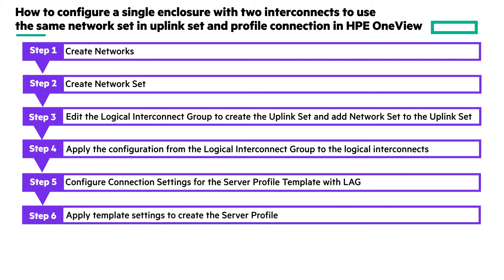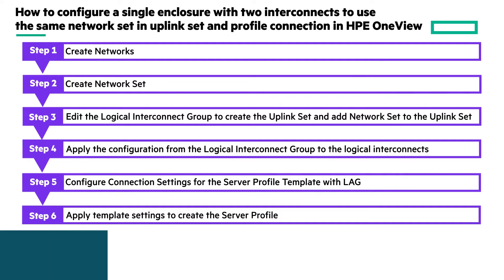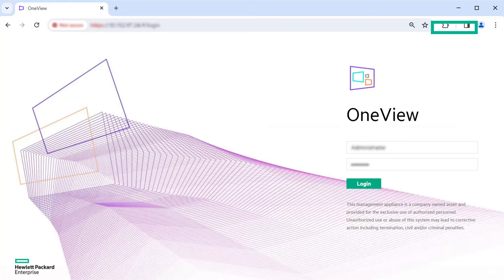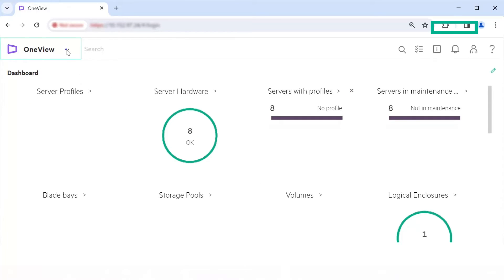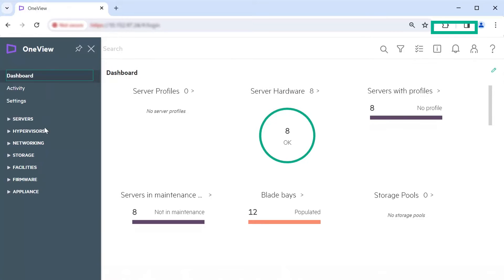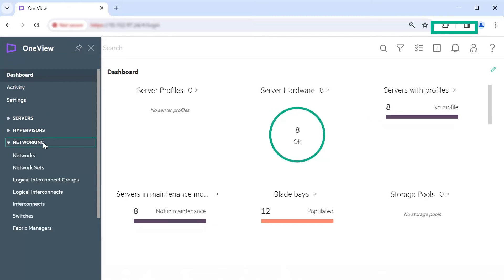After completing the configuration, you can edit it to make further changes. You must have infrastructure administrator privileges to perform all the steps. Now let's start the demo and create networks. Login to the HP OneView appliance. From the main menu, select Networking, Networks.